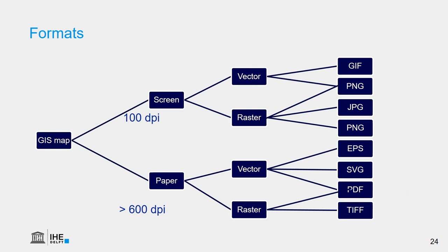After producing your map in the design view of your GIS software, you need to think about how to save the file. We can save it for the screen — for a projector, website, or presentation — or for paper. For the screen, we cannot perceive more than 100 DPI. For paper, we use a very high resolution, typically larger than 600 DPI. DPI is dots per inch.